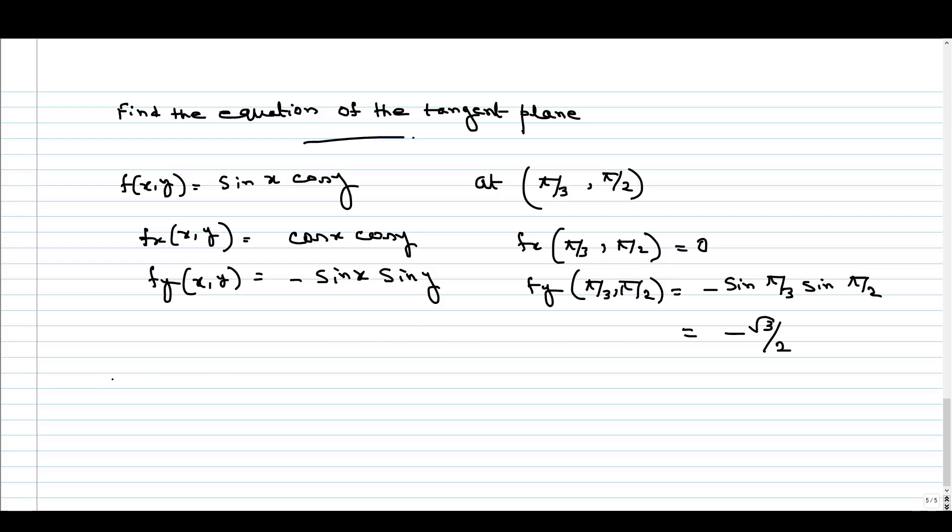Now we substitute these values into the equation of the tangent plane: z = f(π/3, π/2) + f_x(x - π/3) + f_y(y - π/2). This gives us z = f(π/3, π/2) + 0(x - π/3) + (-√3/2)(y - π/2).